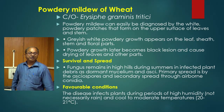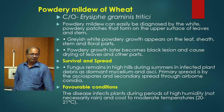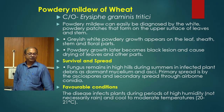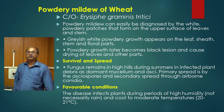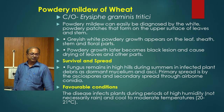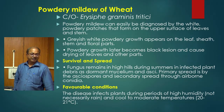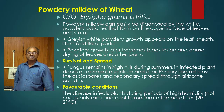Powdery mildew is not a major problem in Jharkhand state, but it has academic importance. The causal organism is Erysiphe graminis. Powdery mildew can be easily diagnosed by white powdery patches that form on the upper surface of leaves and stems. A grayish-white powdery growth appears on the leaves, sheath, stem, and floral parts.